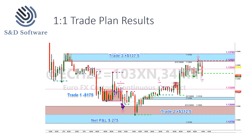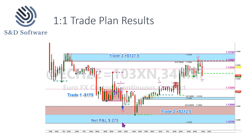The first trade we had here stopped out for $175. Our next trade hit, and our one-to-one profit was $312.50. Those two trades hit yesterday, and then this trade hit early this morning for a profit of $137.50. So our net P&L on the three trades is $275.